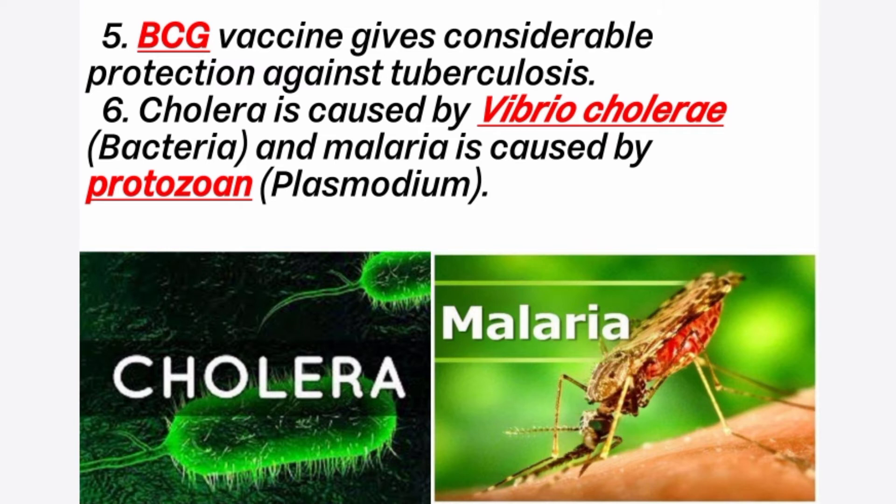BCG means Bacillus Calmette-Guérin. This vaccine is given to newborn babies. 6th question: Cholera is caused by. Answer is Vibrio cholerae, which is a bacteria.